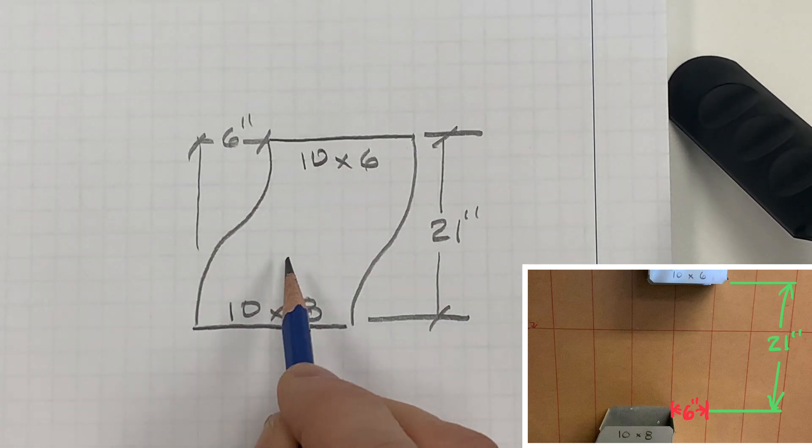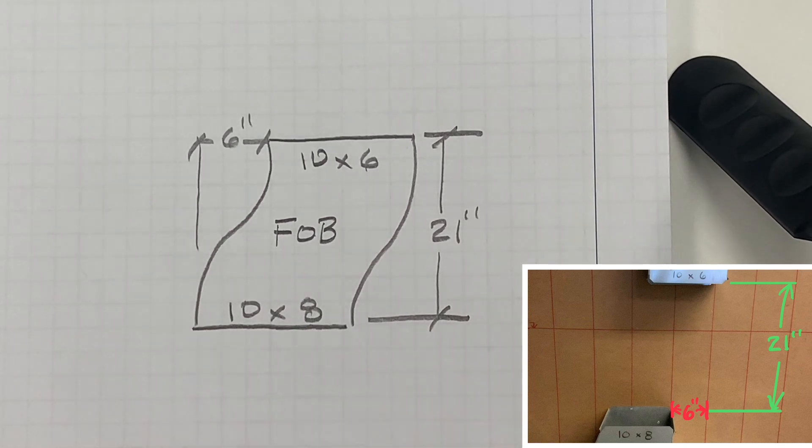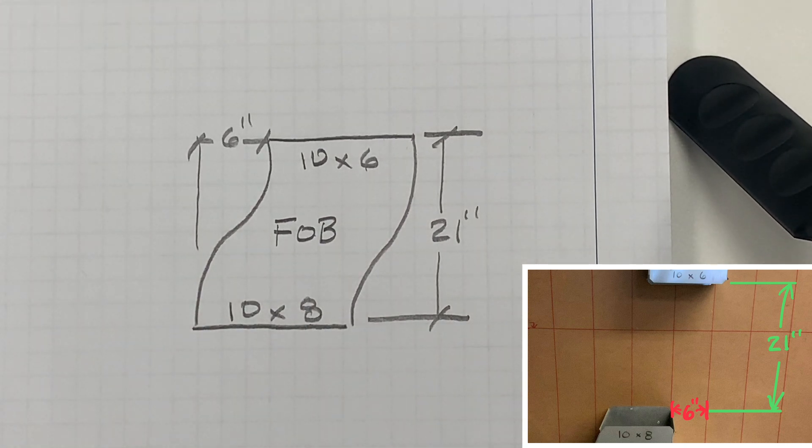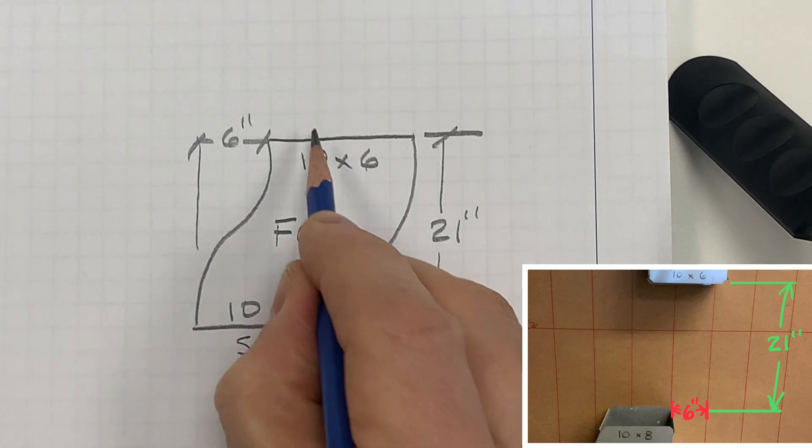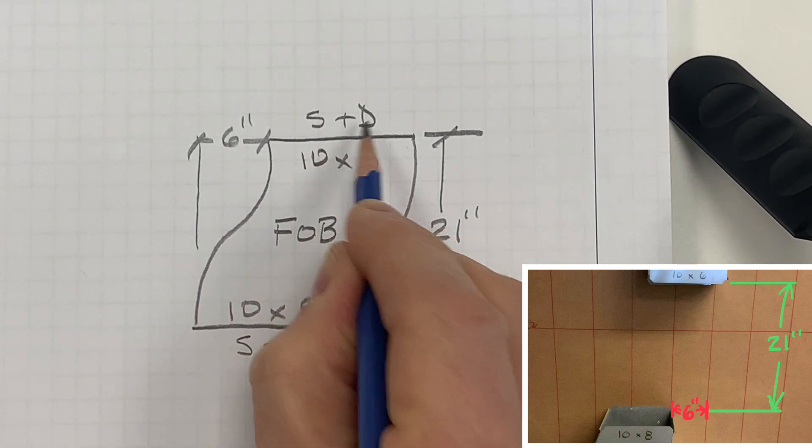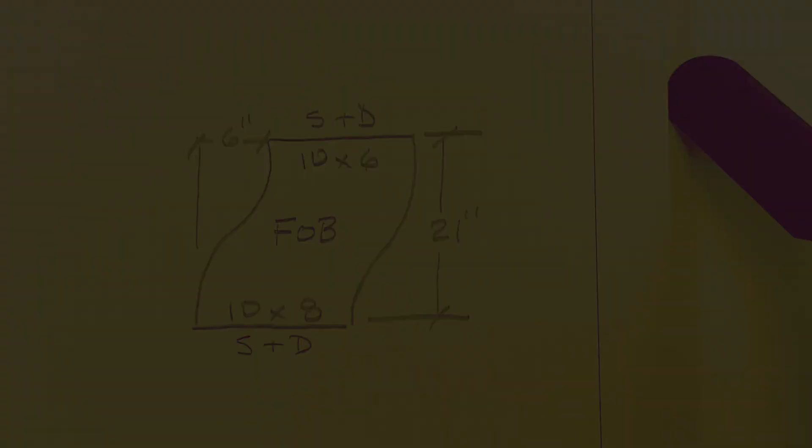And you will notice the depth of the duct is 6 inches on the one end and 8 inches on the other. But in this scenario, this offset is flat to the surface on the back side, so flat on bottom. Don't forget to add the connectors on each end, and here is your shop ticket that's ready to be sent to the shop.